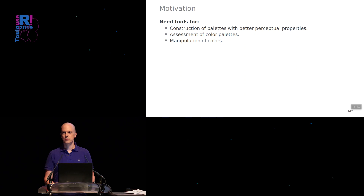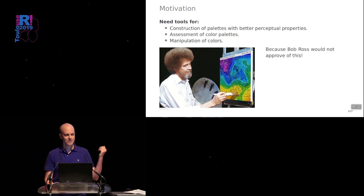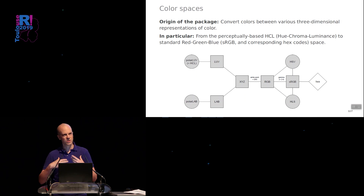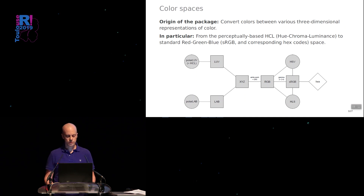What we wanted to provide in colorspace was a principled way to construct palettes with better properties, where we have full control over what we want to do — to assess and manipulate colors. The package is called colorspace because when Ross Ihaka started it, there weren't many implementations of color space conversions available. It was the first flexible one in R. What I'll mostly use here is a conversion from a color space also known as HCL to RGB, which is used for representing colors in R and most other computer systems.